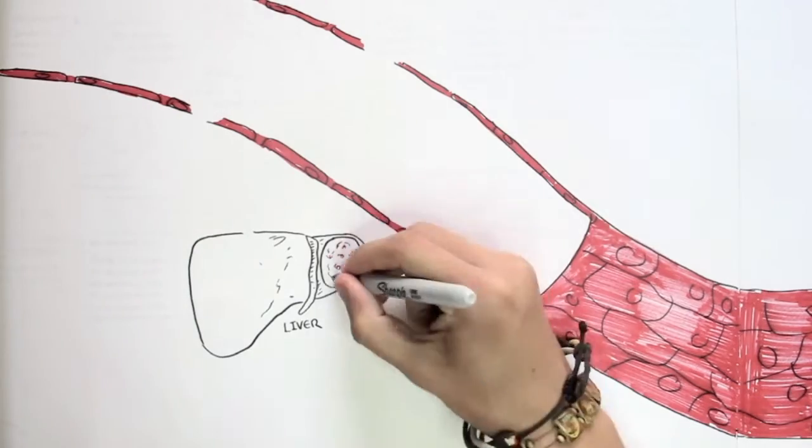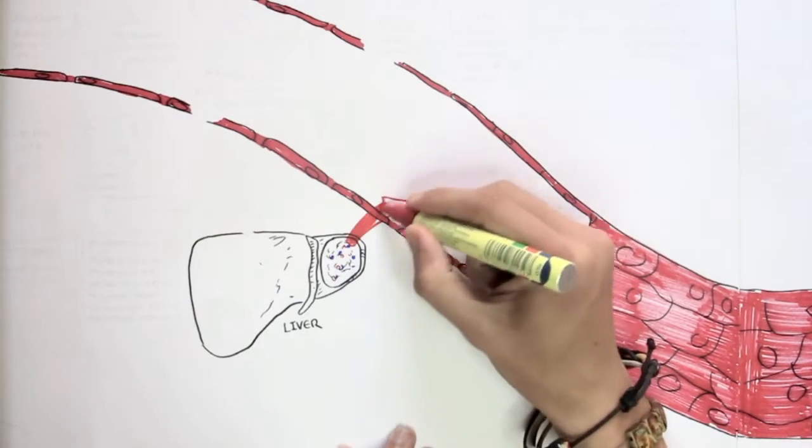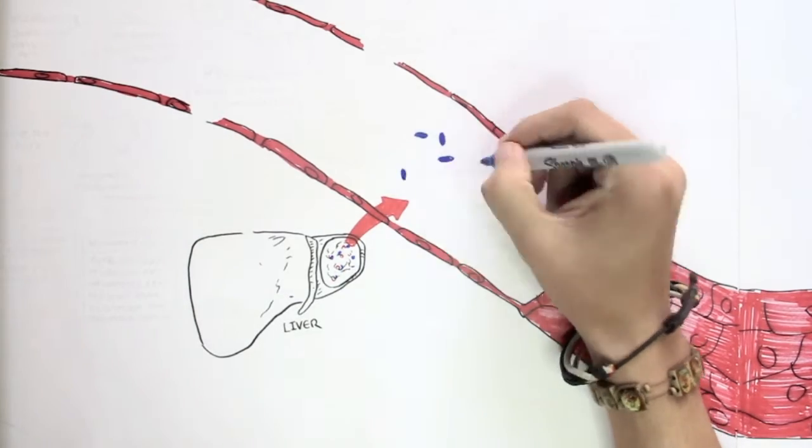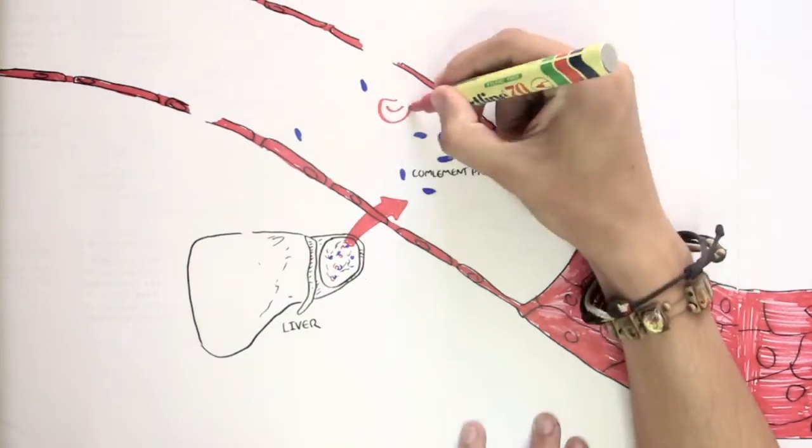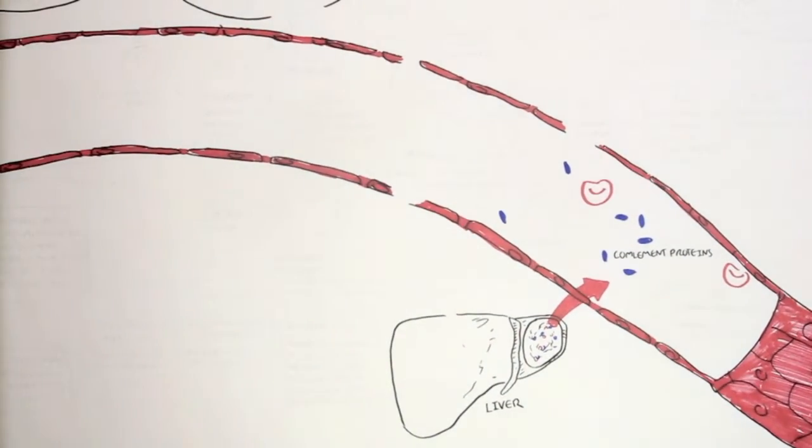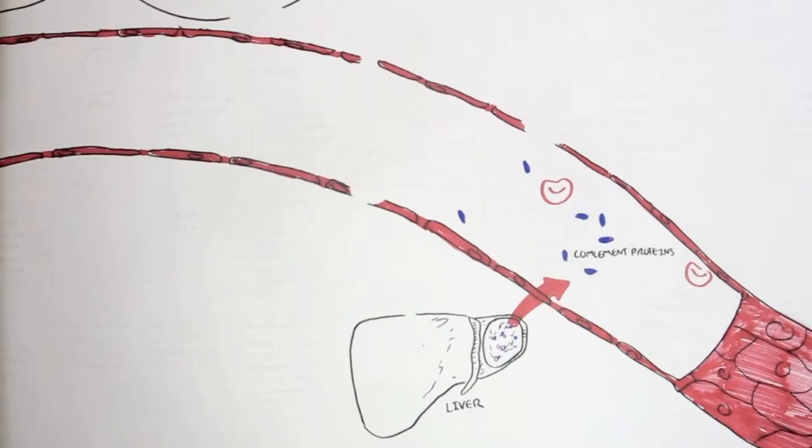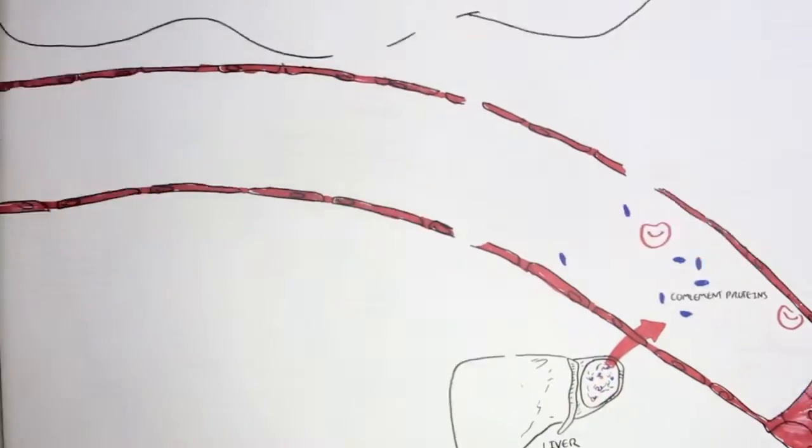A very important substance it secretes in an inactive form is the complement proteins. The complement proteins, which we will soon learn in the next video, are important in the innate immune system to prevent invasion and to promote destruction of the pathogen.